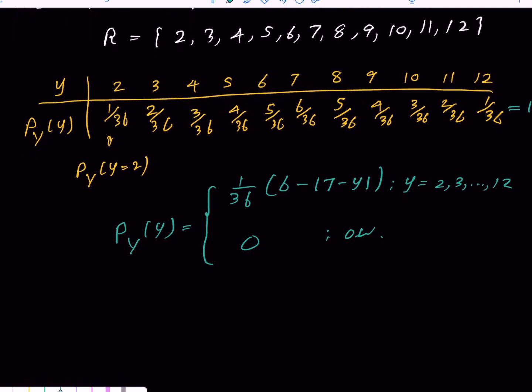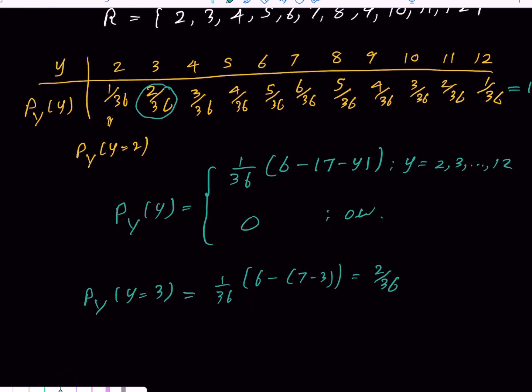We can check it. Let me check for Y equals 3. 1 over 36 times 6 minus absolute value of 7 minus 3, which equals 4, giving us 2 over 36. You see that this equals 2 over 36, the same value here. If you need to check any number, just plug the value for Y and you can get any probability from 2 to 12 using this. This is the PMF of Y as a formula.